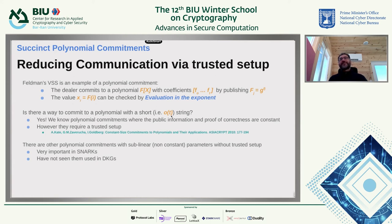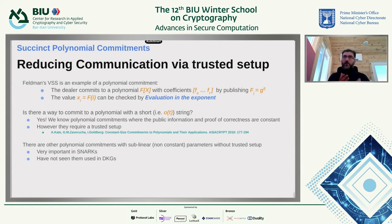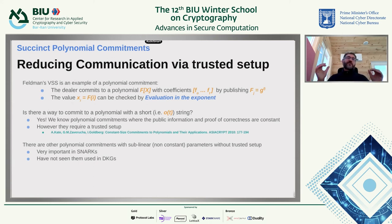So the question is: is there a way to commit to a polynomial with a shorter string — specifically, where both the commitment and the proof of correctness are sublinear in the polynomial, ideally constant size? In fact, we do have a polynomial commitment where the commitment and proof of correctness are constant size. This is a beautiful paper by Kate et al., where they use bilinear maps and the divisibility property of polynomials to show you can commit to a polynomial with a single group element and prove the correctness of an evaluation with one group element as well. This gives a VSS with much reduced communication, but it requires a trusted setup, which itself has linear size in the polynomial.